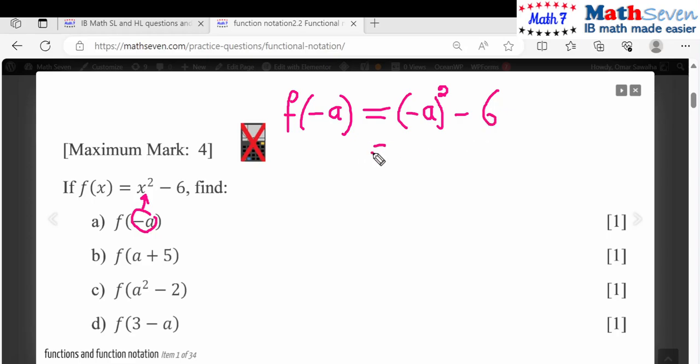That will become a squared minus six, that's your answer. You can tell me where did the minus disappear? Well because you have an even power, the even power eats up this minus sign. Minus a times minus a is a squared. This is for part a.